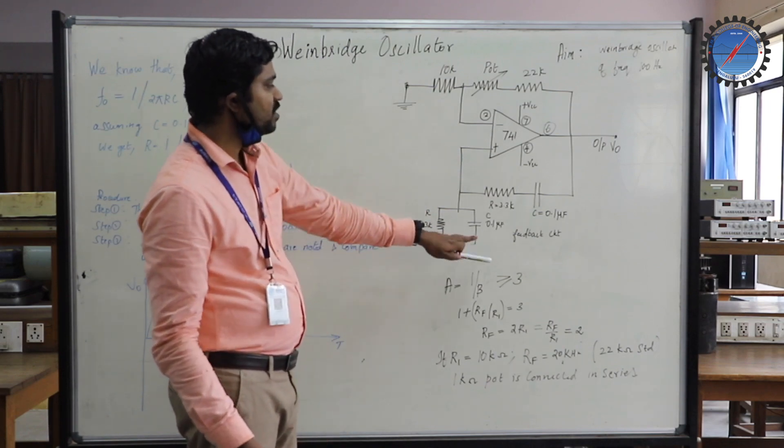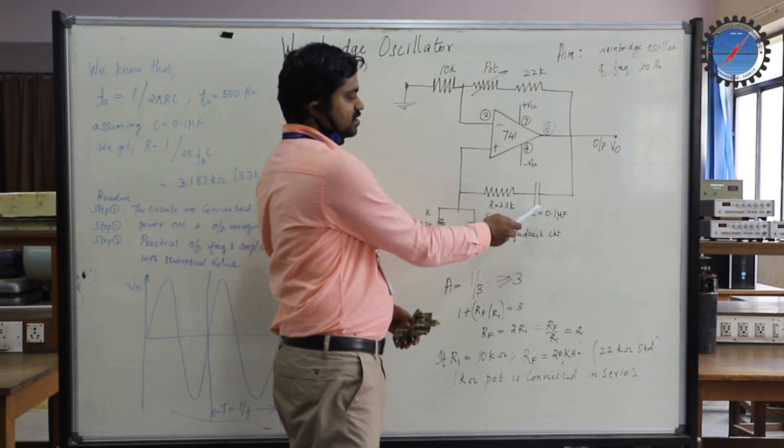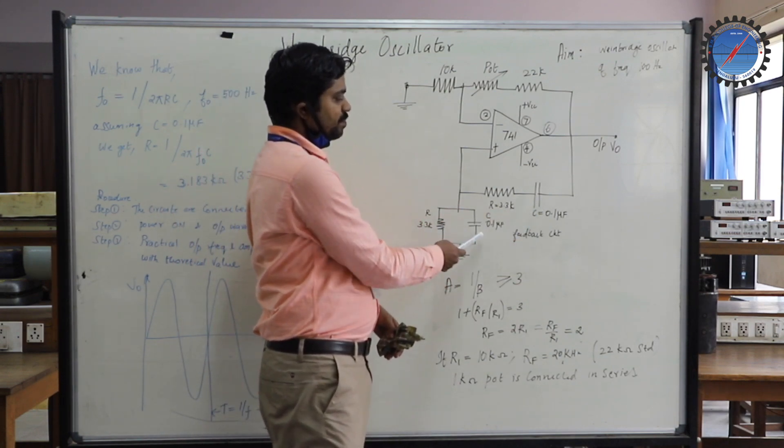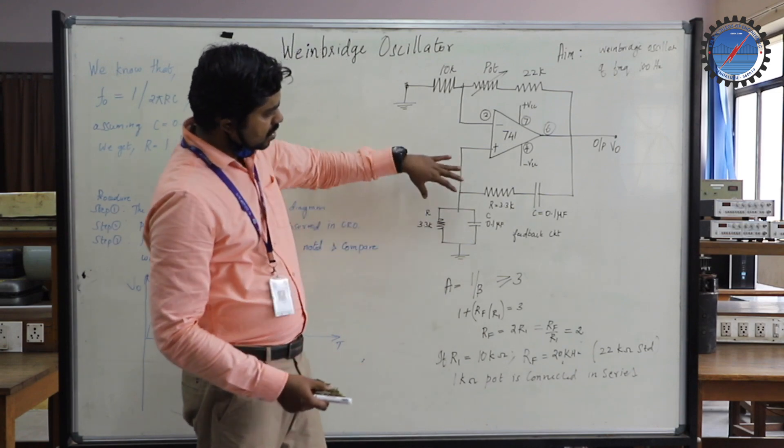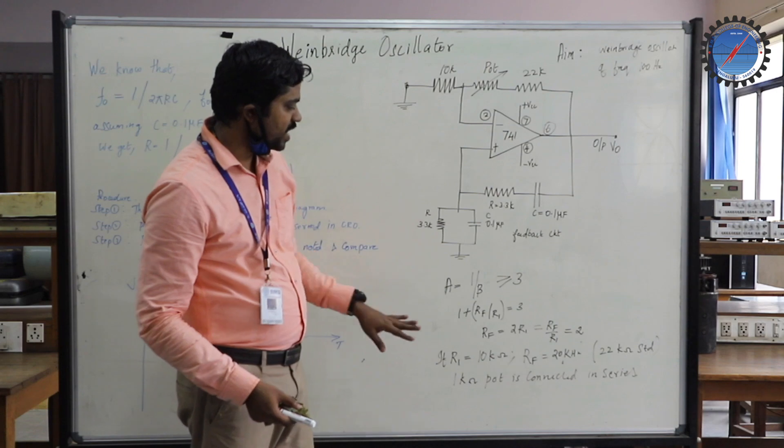It can vary the magnitude of your V0. The third pin is connected with a feedback circuit wherein a resistor is in series with the capacitor, and then a resistor in parallel with the capacitor. All these values we have to calculate.